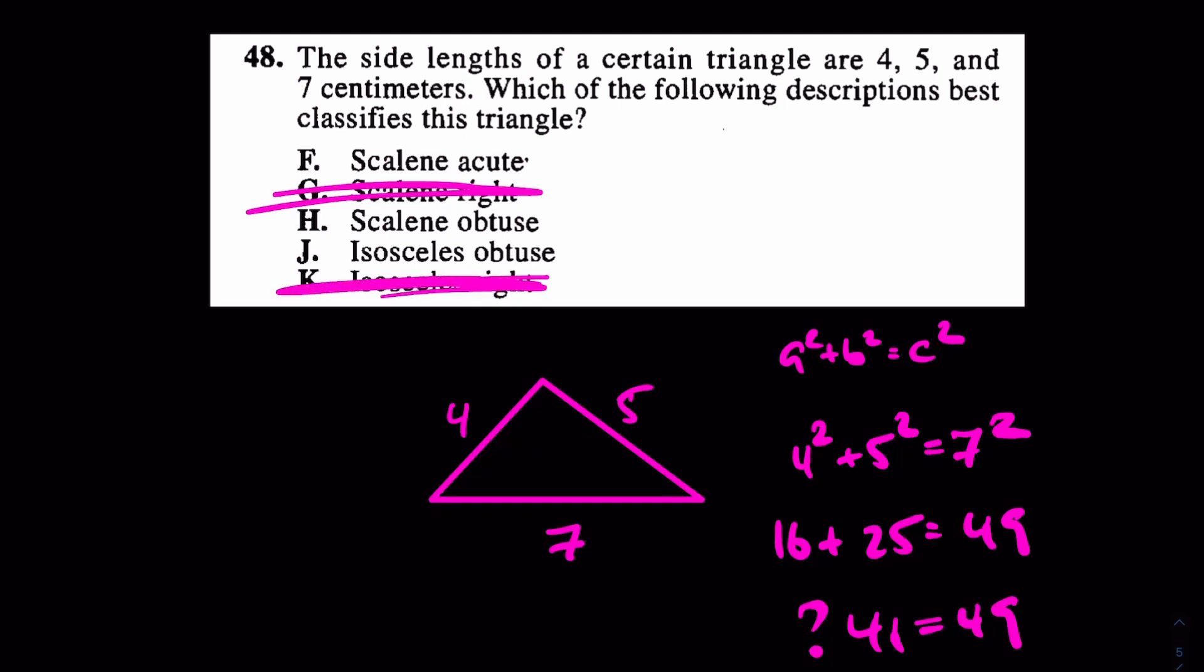Now my question to you guys is: is it acute, is it obtuse, or is it isosceles first of all? It's definitely not isosceles because this side is 4 and this side is 5—no two sides are the same, so it's definitely not J.